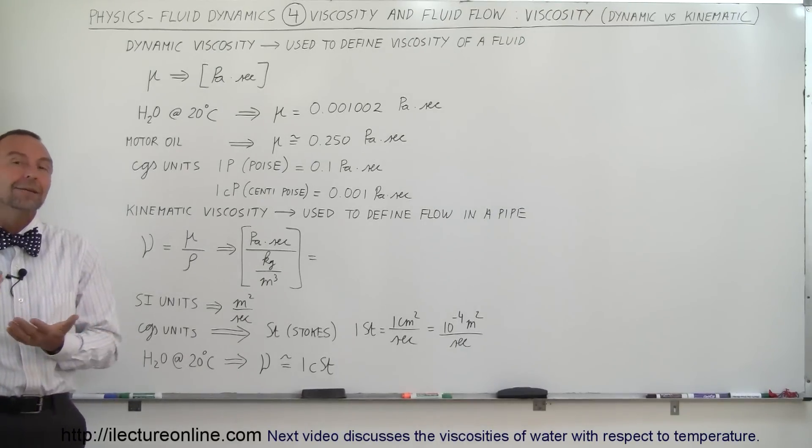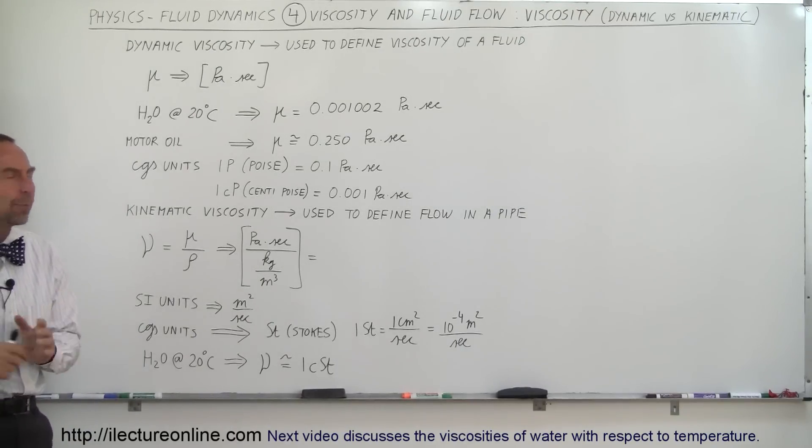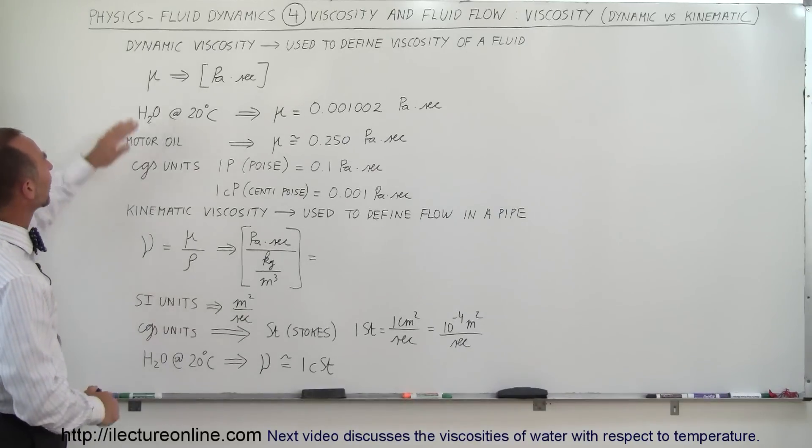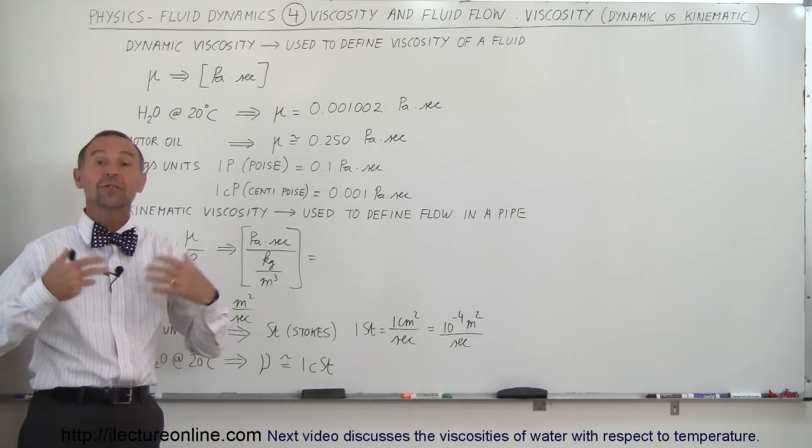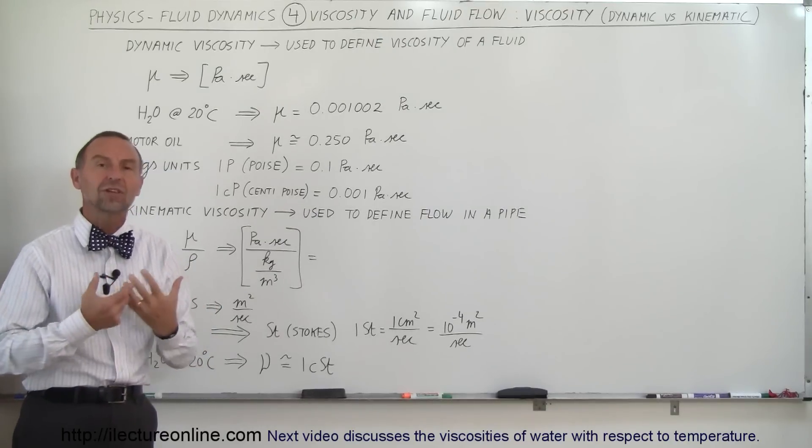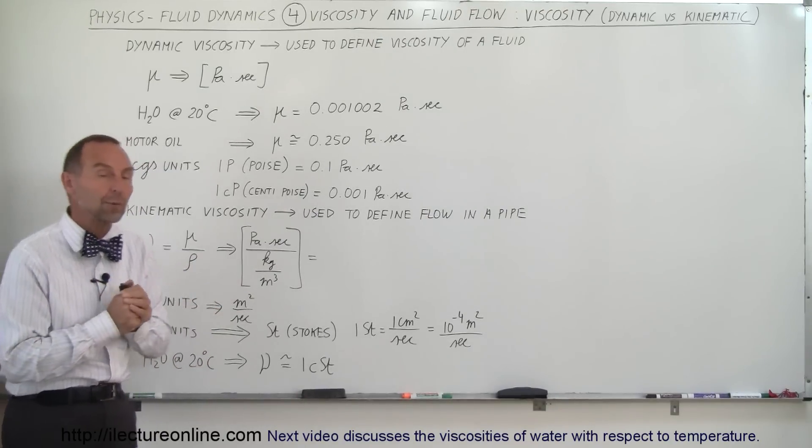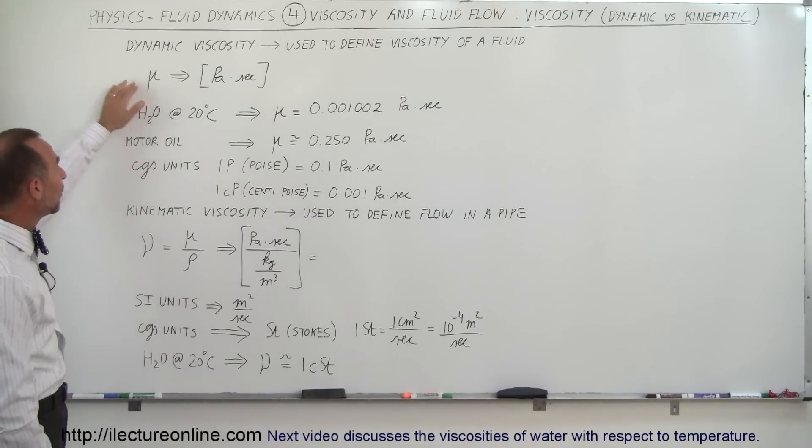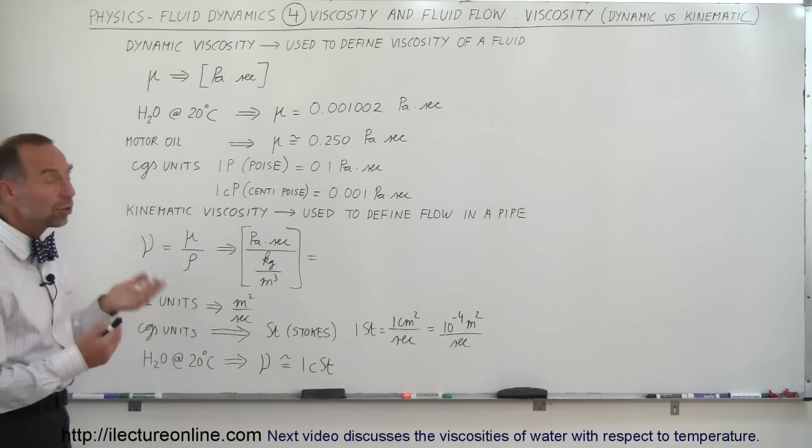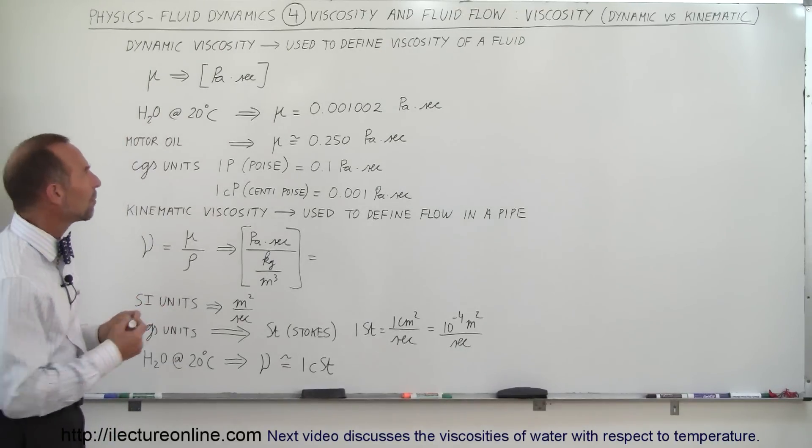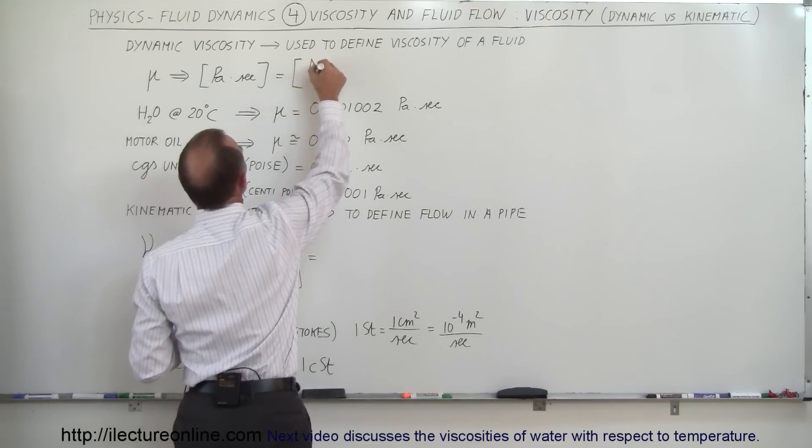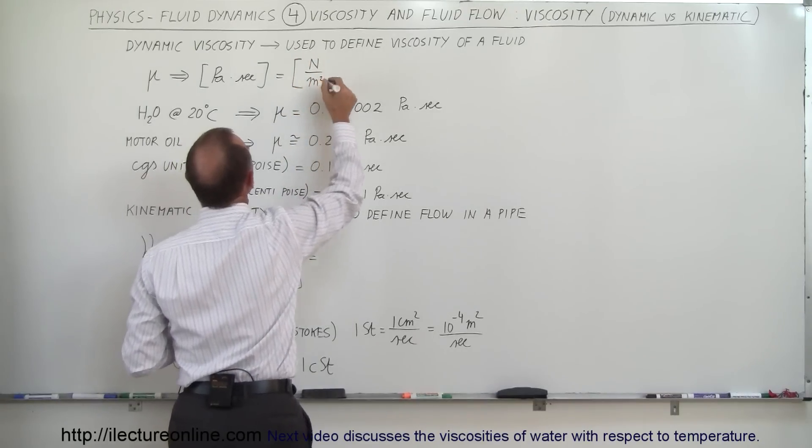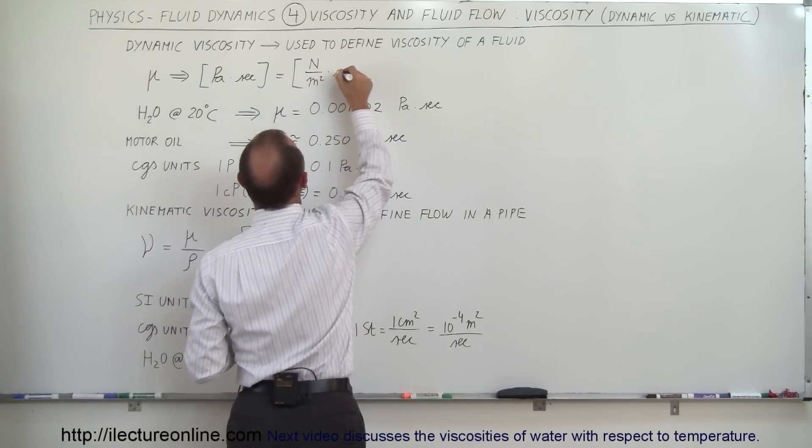There's a dynamic and a kinematic viscosity. So let's take a look at both of these. First of all, let's start with dynamic viscosity. It is typically used to define simply the viscosity of a fluid. How viscous is a fluid? Well, we have what we call a coefficient of viscosity, and we use the letter mu for that. And the units are pascals times seconds. Remember, when we break that down, a pascal is a newton per meter squared, because it's units of pressure, times seconds.